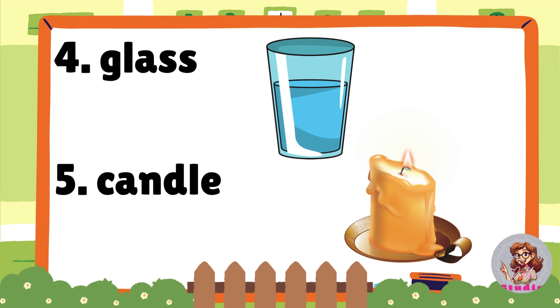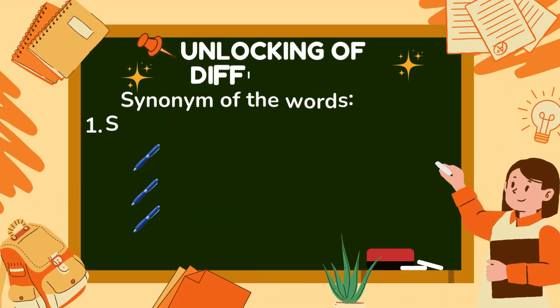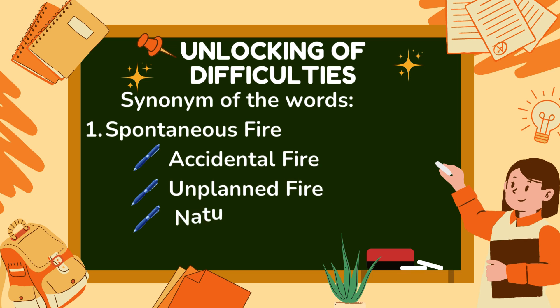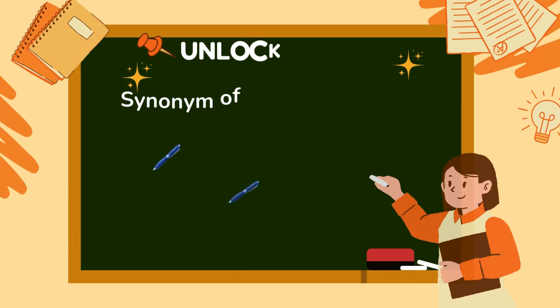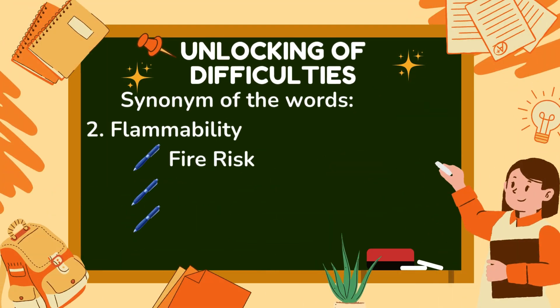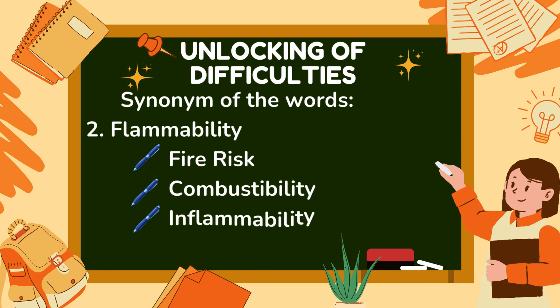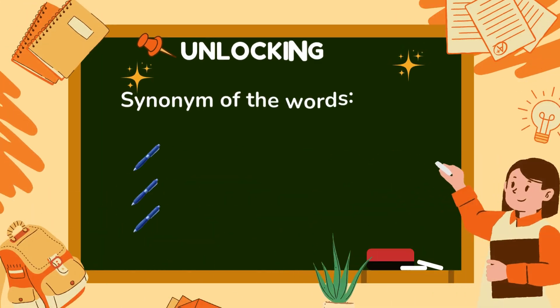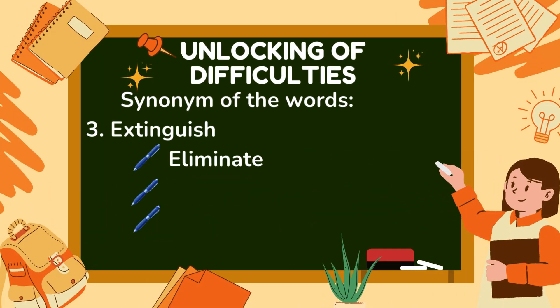Four, glass; five, candle. Unlocking of difficulties — synonyms of the words: one, spontaneous fire, accidental fire, planned fire, natural fire. Number two: flammability, fire risk, combustibility, inflammability. Extinguish: eliminate, abolish, put out.